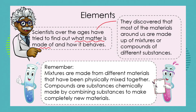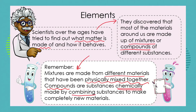Scientists discovered that most of the materials around us are made up of mixtures, and you know very well what a mixture is, or compounds of different substances that have been chemically joined together, not just physically mixed. Mixtures are made up of different materials that have been physically mixed together and can be physically taken apart by evaporation, filtration, or some other means. Compounds are substances that have been chemically joined together to make completely new materials.